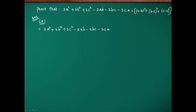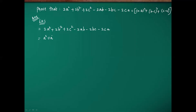Here 2ab is present, so this will be in the form of (a-b)² or (a+b)², where we get 2ab. So let me write 2a² as a² + a², and similarly 2b² as b² + b², and 2c² as c² + c².